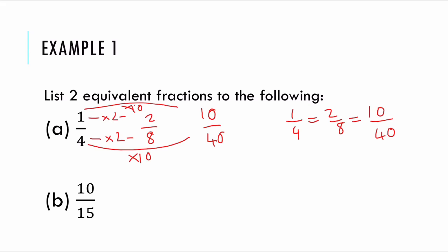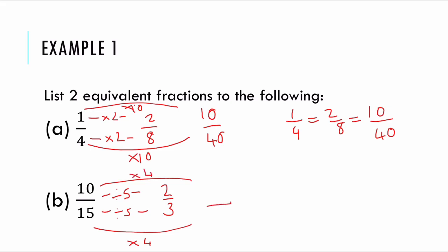Now let's do the same with another fraction. Looking at ten over fifteen, I can see there's a nice number that divides into both of these. If I divide the top and the bottom by five, I get two over three. I could also times by four to get forty over sixty. So now I know that ten over fifteen, two over three, and forty over sixty are all equivalent fractions. You could multiply by one hundred, one thousand, divide by one point five, and you will always produce an equivalent fraction as long as you do the same to the bottom that you do to the top.